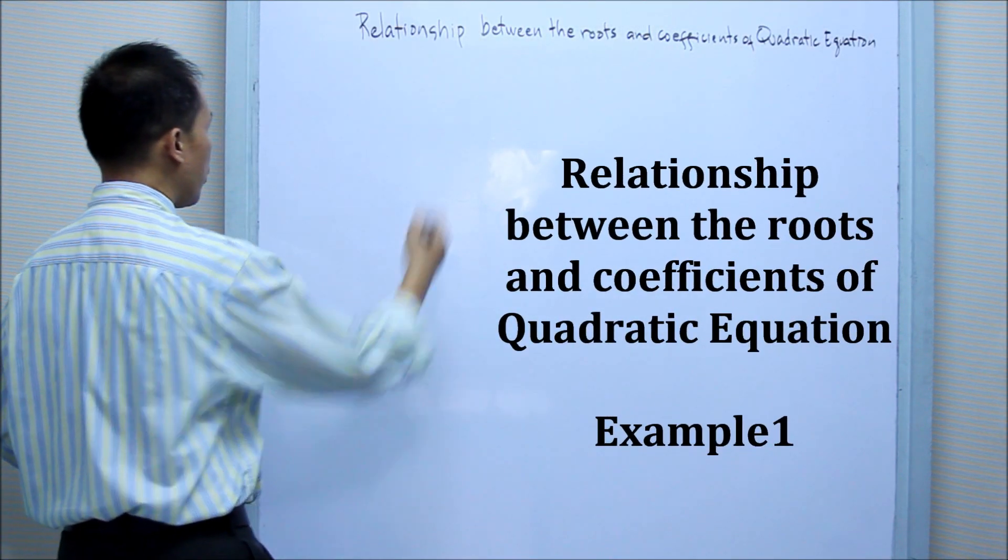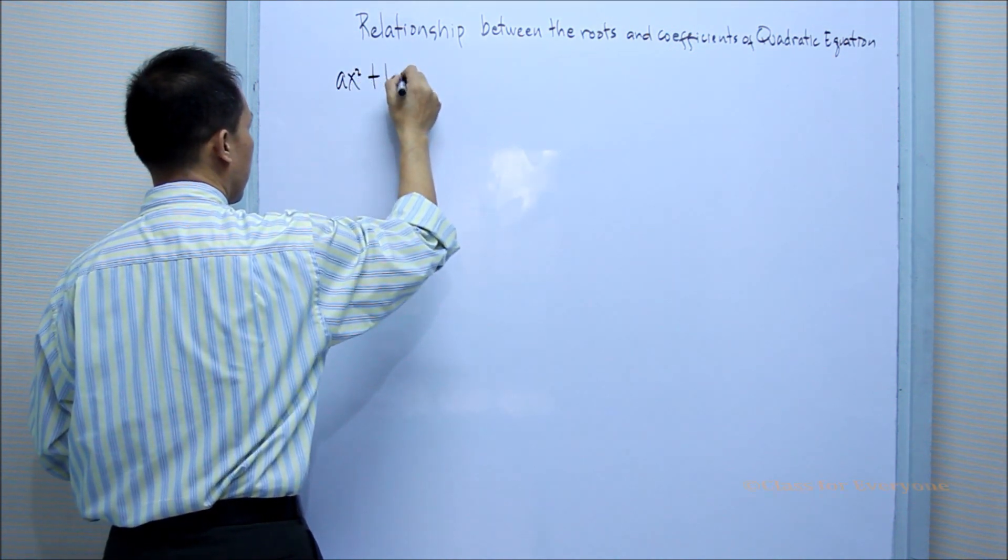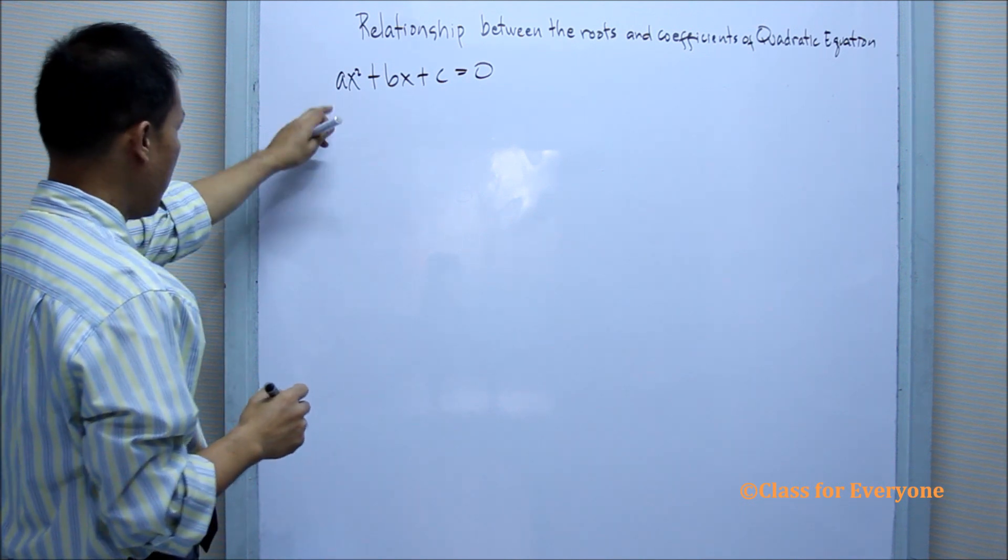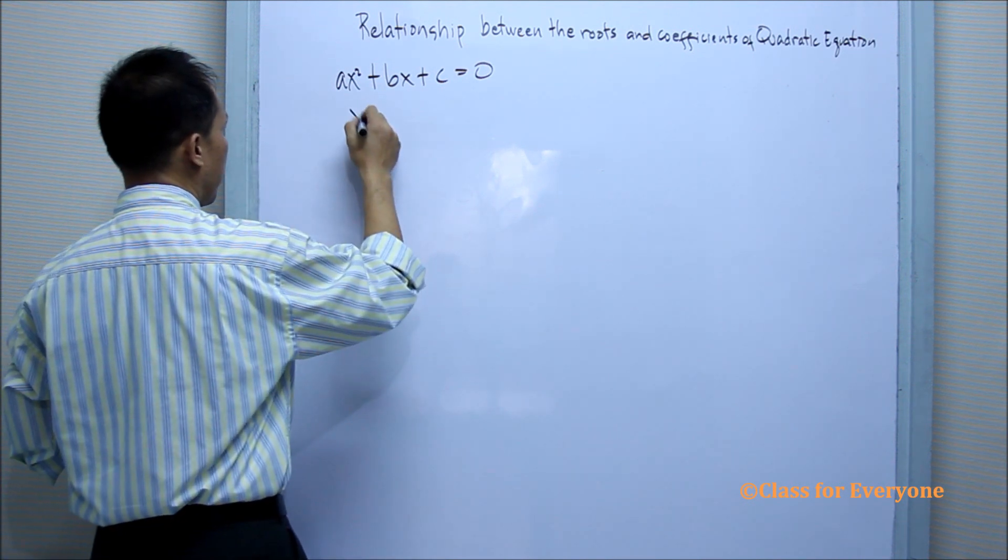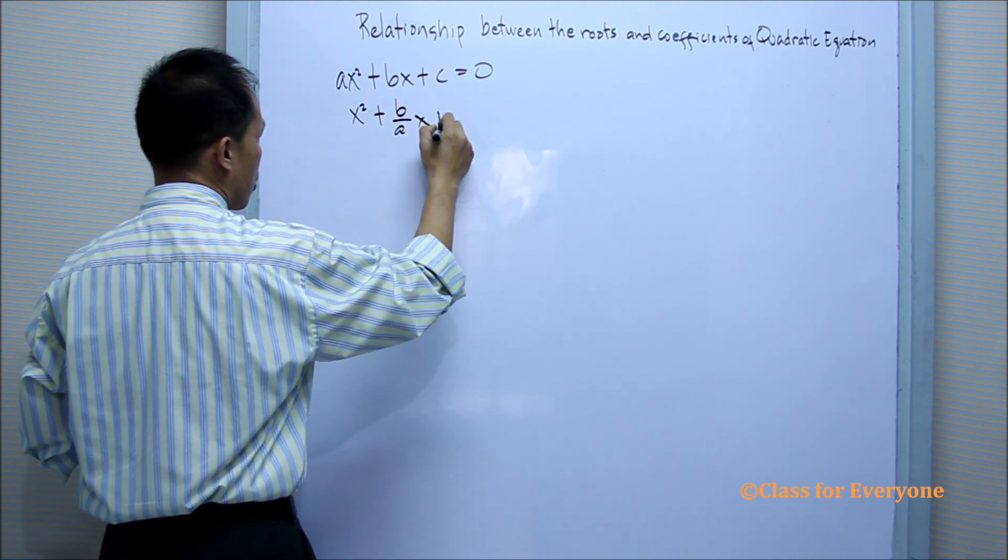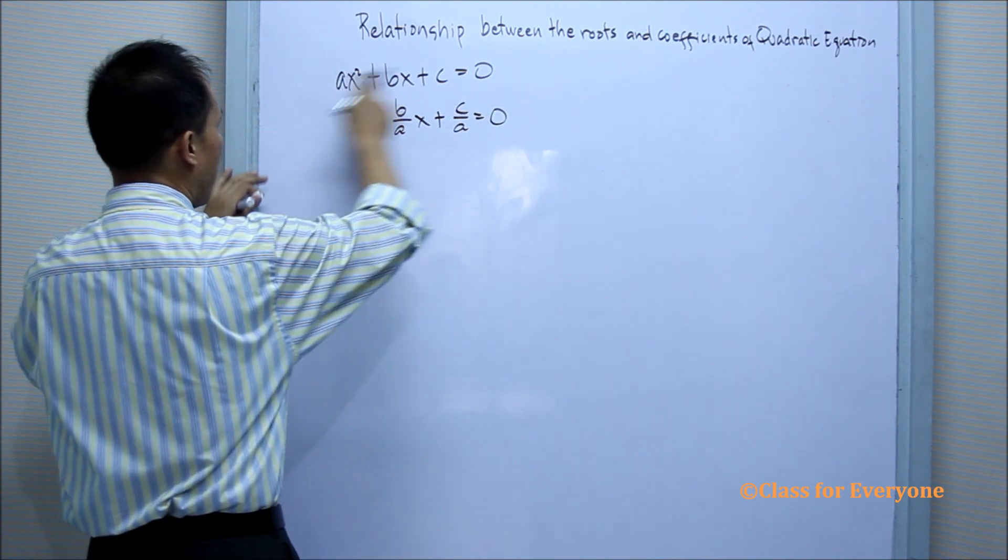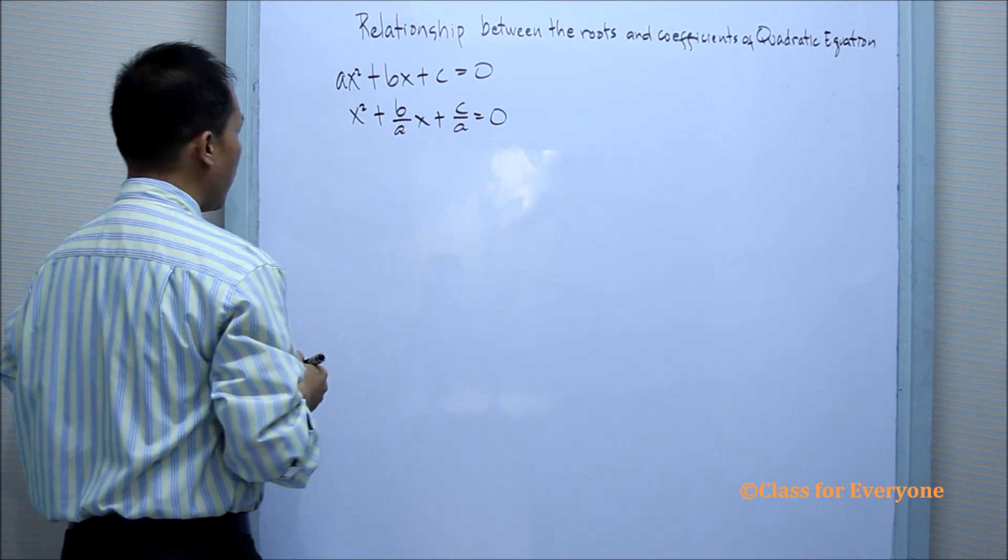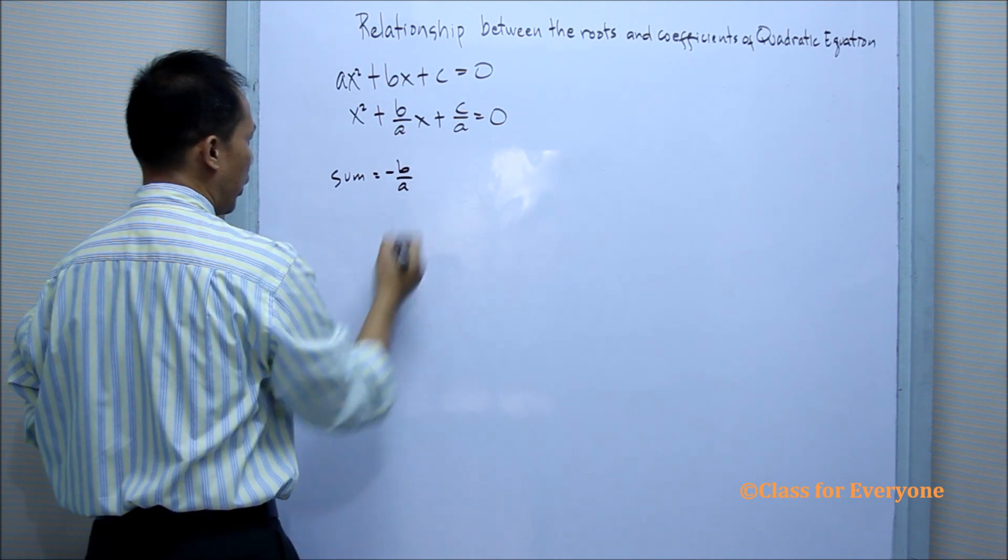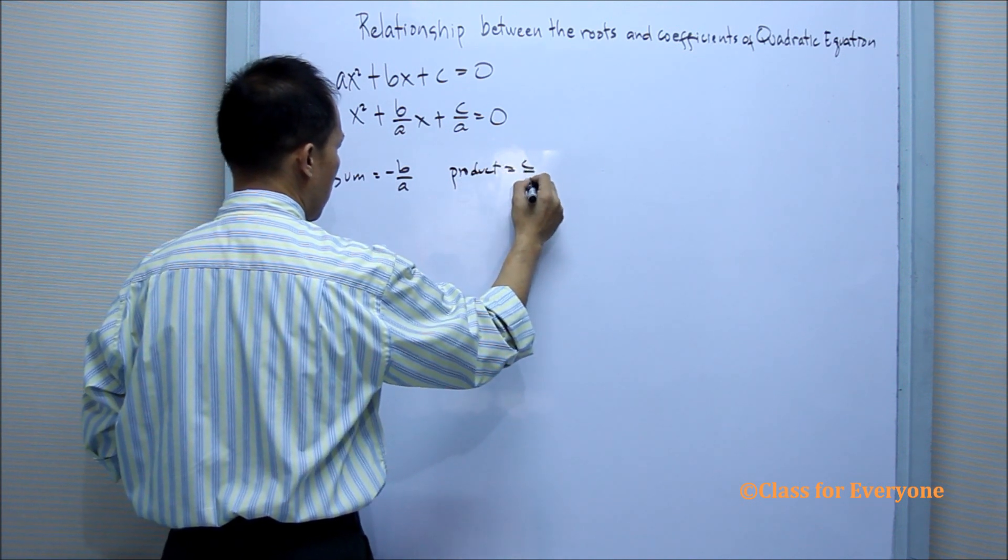The quadratic equation in standard form is written as Ax² + Bx + C = 0. We can rewrite this equation into the form x² + (B/A)x + (C/A) = 0 by getting the reciprocal of A and multiplying it to all the terms. We also know that the sum is equal to negative B/A and the product is equal to C/A.